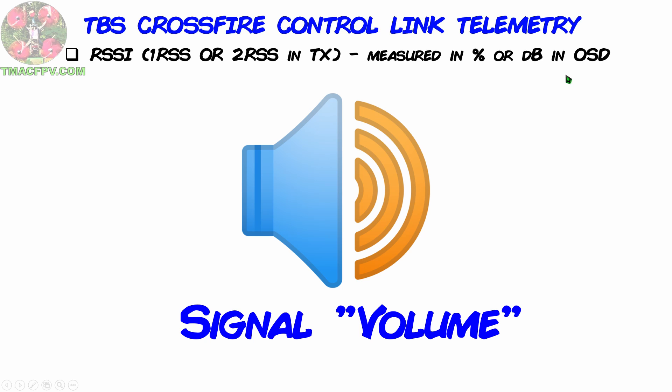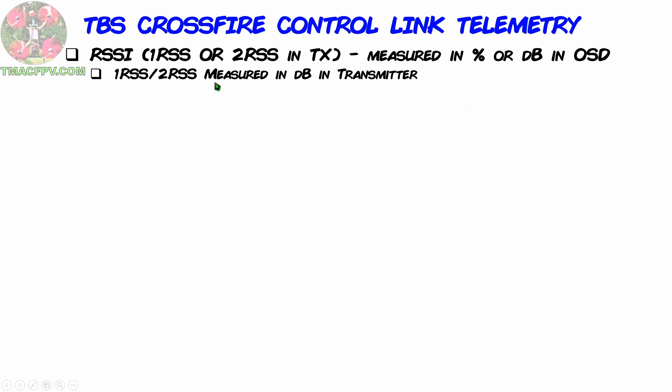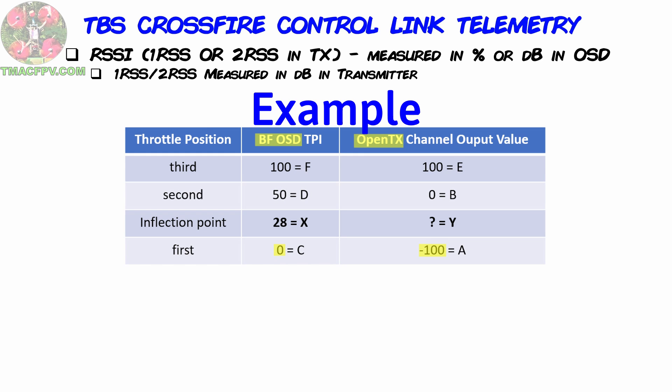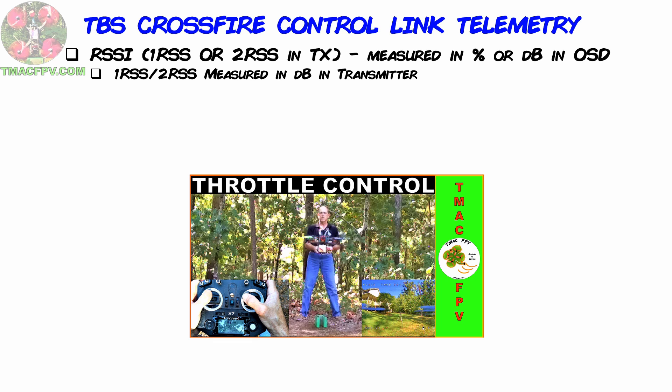Let's start with RSSI, which is your received signal strength indicator. If it were sound, this would basically be how loud it is — the volume. When activated in your OSD you can display it as both a percentage or in decibels (dB). Now's a good time to be aware that sometimes the range of values for a variable within OpenTX on your transmitter and the range of that same variable within Betaflight and therefore your OSD can be different. They can use different scales as well as different units of measurement. For example, in your transmitter certain things can be measured in dB whereas in Betaflight those same things may be in percent.